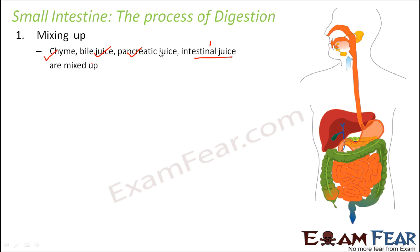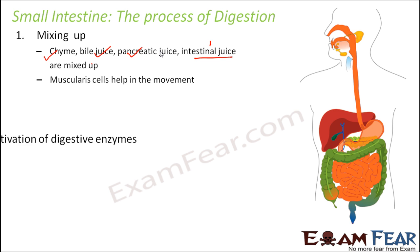So now you have all four — chyme, bile juice, pancreatic juice, and intestinal juice — in the duodenum, and proper mixing must take place. The muscularis cells, by their contractile movements, help in mixing all these four things together. Once everything is mixed up properly, the action of the enzymes starts. But first, many enzymes are in inactive form and need to be activated.